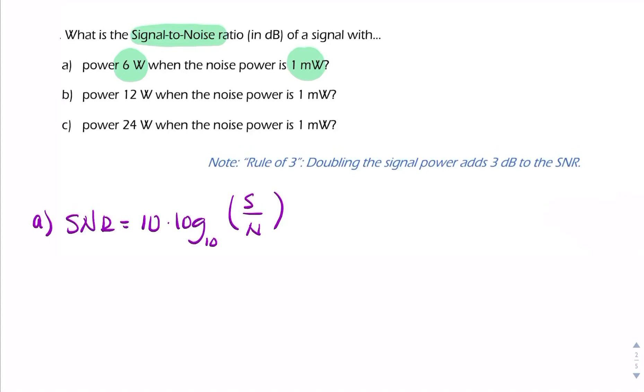So I can simply replace the signal power with 6, and the noise power with 1 milliwatt. If you do that calculation, you get 38 decibels. I'm rounding to the nearest decibel here.